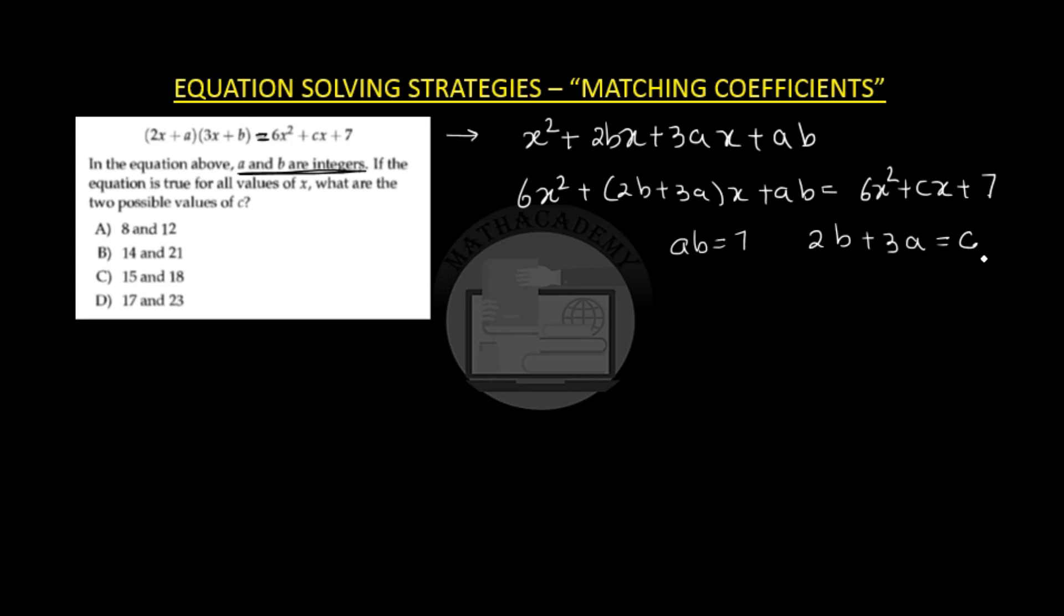Now we do not know c, we do not know a, we do not know b but it is given in the question that a and b both are integers. So what can be the possible value of a and b such that a times b gives us a 7 because we have figured out that ab is 7. It is possible only when I do 1 times 7.